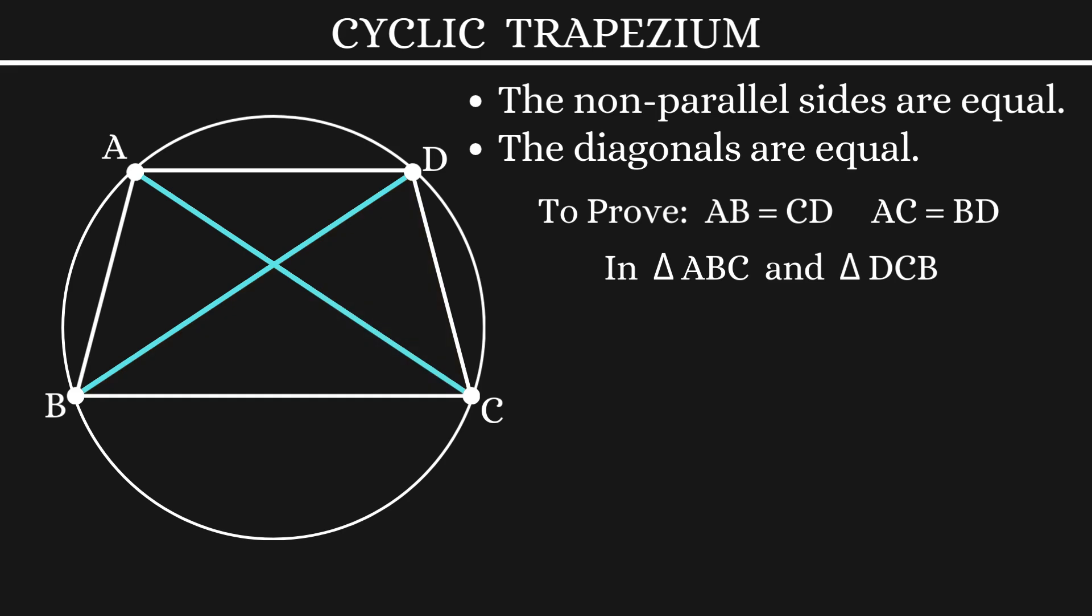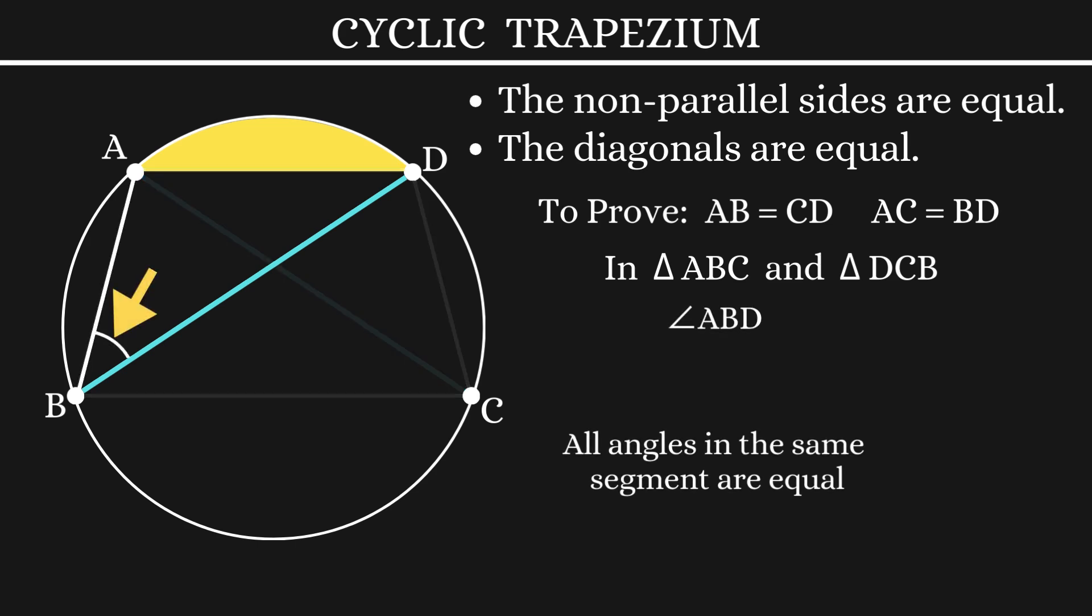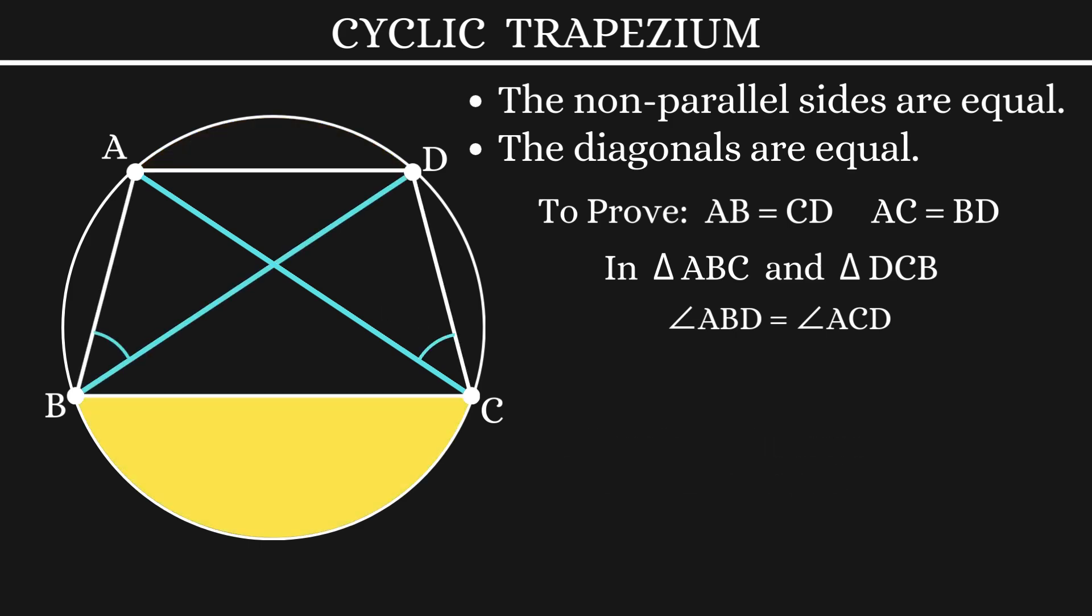Now, we will focus on this segment. We know that all angles in the same segment are equal. So, angle ABD is equal to angle ACD. Also, considering this segment, we have angle BAC is equal to angle BDC.